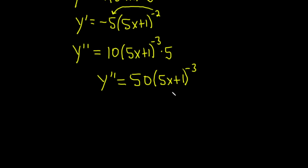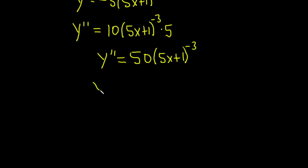As a final step, we can just take this and bring it back down. So y double prime equals 50 over (5x+1) to the third power. And that would be the second derivative of the function.